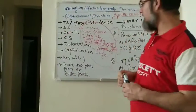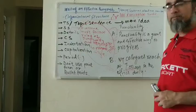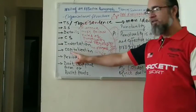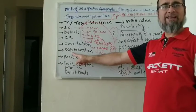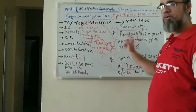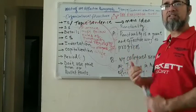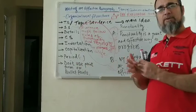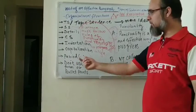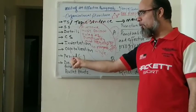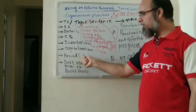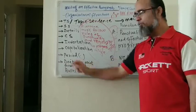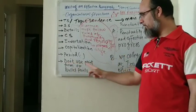The next important thing is capitalization. When writing a paragraph, the first letter of a sentence should be capital. After each full stop, when you start a new sentence, the first letter should be capital. When an idea is complete at the end of a sentence, we put a full stop — also technically called a period. We have to put a full stop at the end of each sentence.